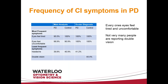We also analyzed the frequency of symptoms reported. The most frequent symptoms were eyes feel tired and eyes feel uncomfortable, and the least frequent symptoms were also eyes feel tired and eyes feel uncomfortable — meaning everyone in the sample reported them, whether or not they had Parkinson's. Notably, double vision was not very high on the list, so we probably can't use double vision alone as a screening tool.